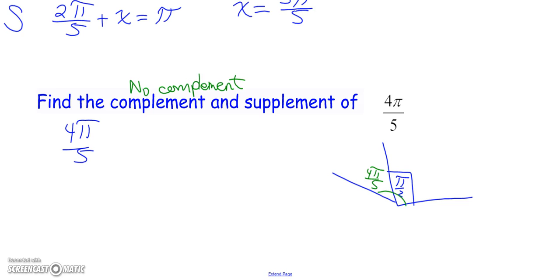We are going to be able to get a supplement. And the supplement here would be π over 5. Because 1π, 1 fifth plus 4 fifths is 1 full π. That one's a little bit easier.